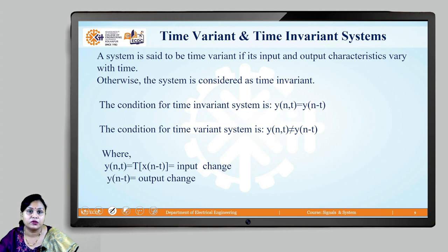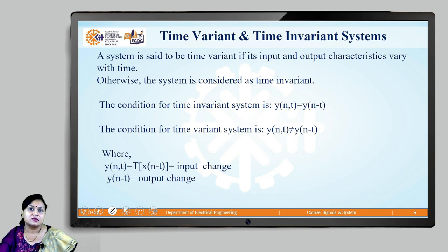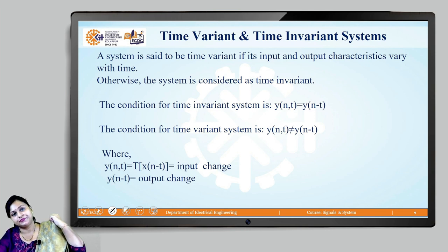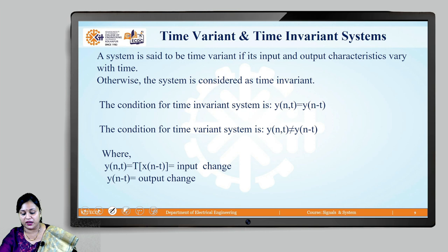Now let us talk about time variant and time invariant systems. For a time variant system, the input and output characteristics will surely vary over the period of time. Whereas if the characteristics are not varying over the period of time, such systems are said to be time invariant in nature.